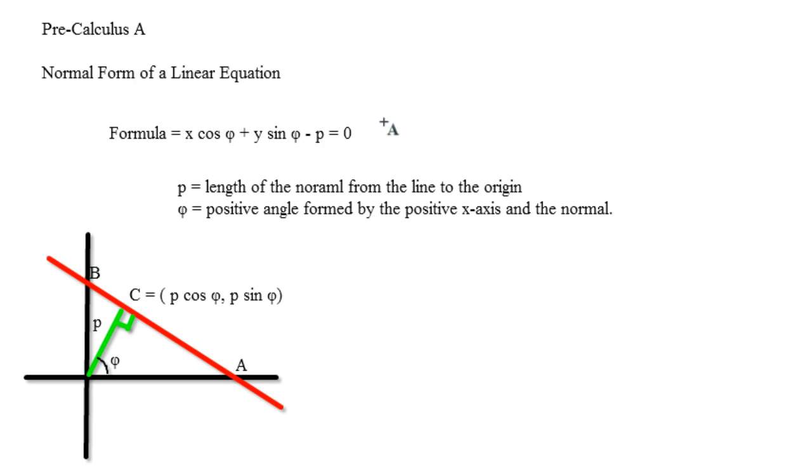Now, normal is just, if you remember from working with normals from a previous time, when you do the dot product, normal is just a line that is perpendicular to a given line. And it just helps to find the perpendicular.